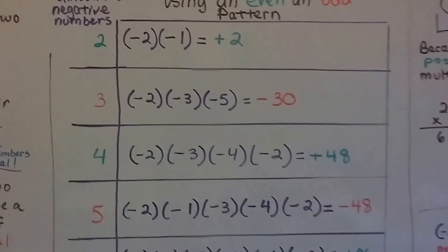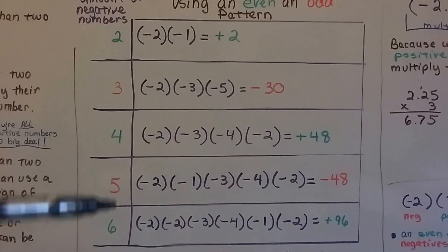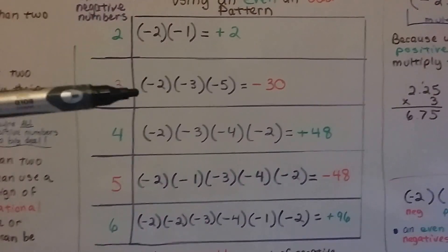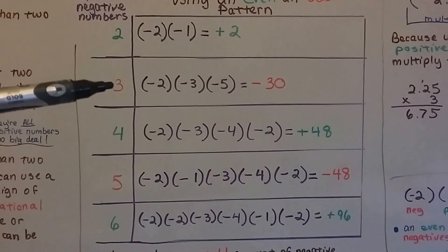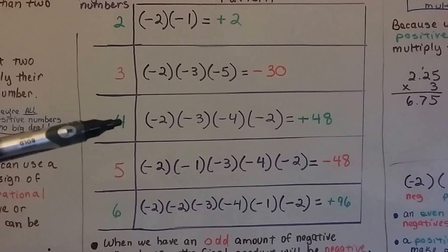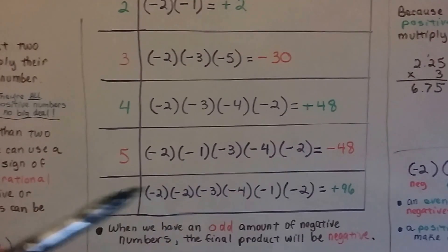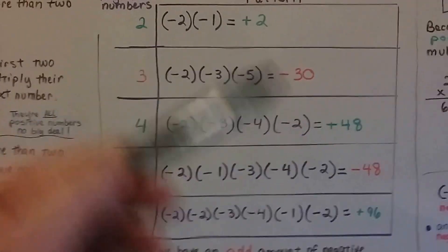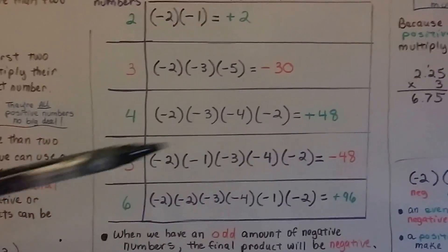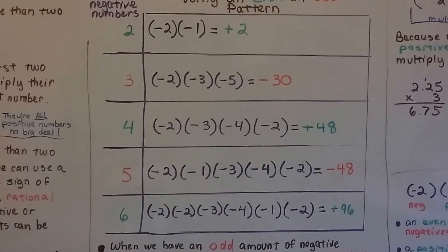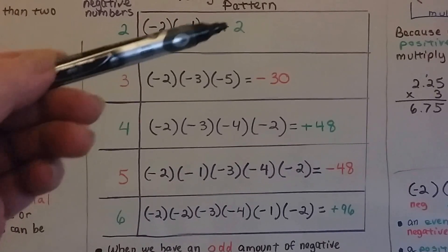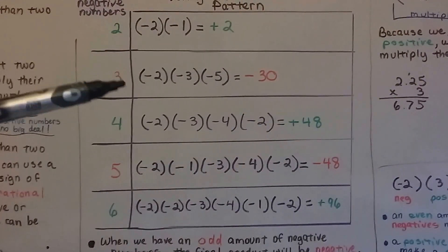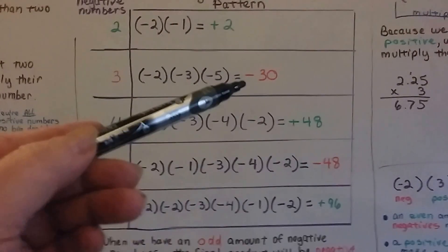Take a look at this table. The table shows the number of negative numbers being multiplied together. Two negative numbers gives a positive; three negatives gives a negative; four negatives gives a positive; five negatives gives a negative; six negatives gives a positive. Using an even-odd pattern, we can tell the sign: if it's an even amount of negative numbers, it's going to be a positive answer. If it's an odd number of negatives — like three — the answer is negative.